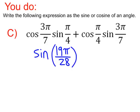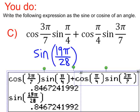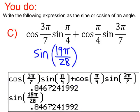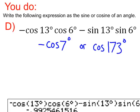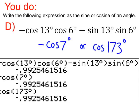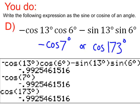For part C, your final answer should be sine of 19 pi over 28. Again, verified via calculator. And, finally, we should end up with negative cosine of 7 degrees. Again, if you're up for the challenge, see if you can prove to yourself that that's the same as cosine of 173 degrees. Thank you.